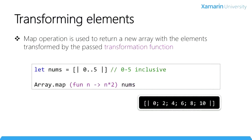We can transform elements using the built-in Array.map function, which produces an array of equal size to the original. This is called a projection in functional terms and, like filtering, requires a function to do its work. The function takes a T representing each item and returns a U representing the transformed item, so the resulting type can be the same or you can change the data to some other type. In this example, we pass a lambda function which doubles each input value, producing an array with integers from 0 to 10 incremented by 2.